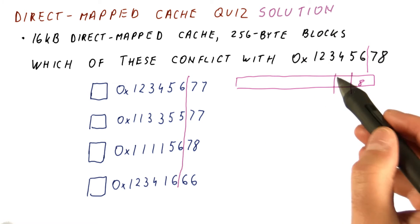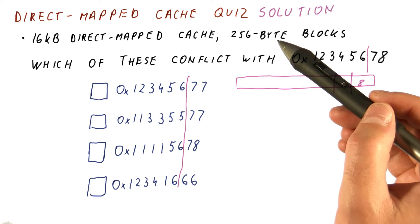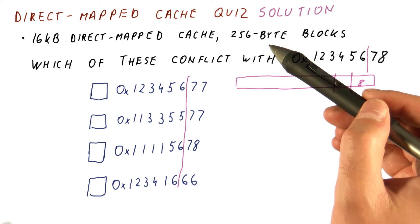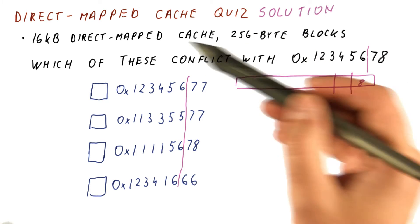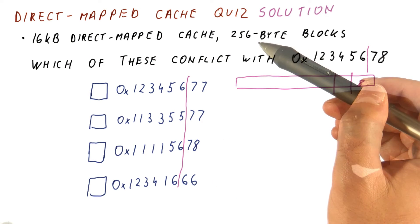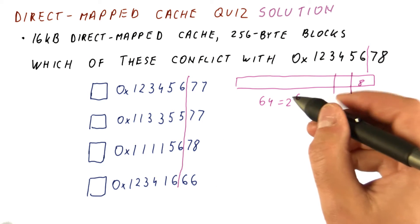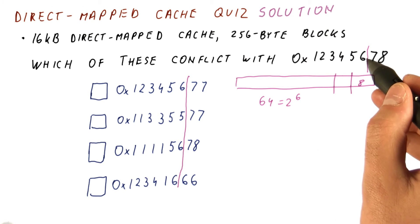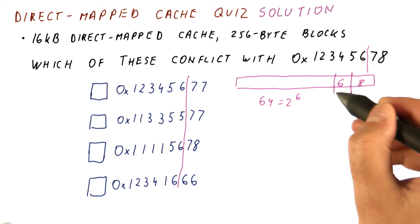Now we need to figure out how many bits are in the index. We have 16 kilobytes and 256 byte blocks. The number of blocks in the cache is this divided by this, and that gives us 64 blocks. 64 is 2 to the sixth, so we need the next six bits here to tell us what the index is.